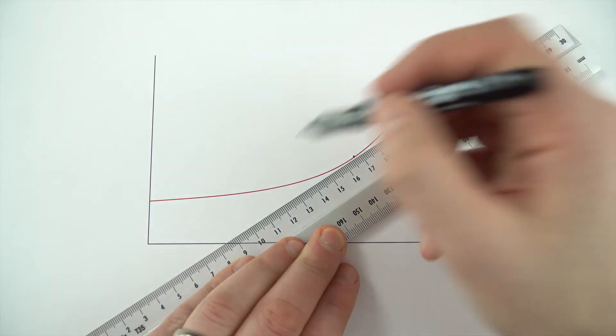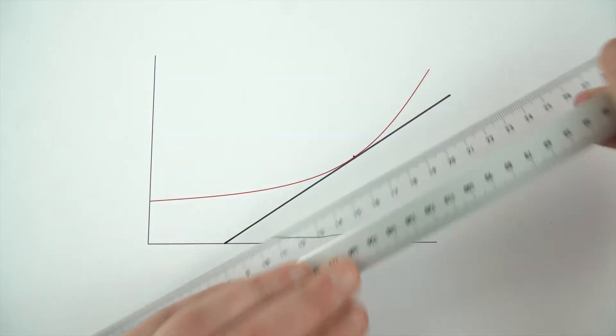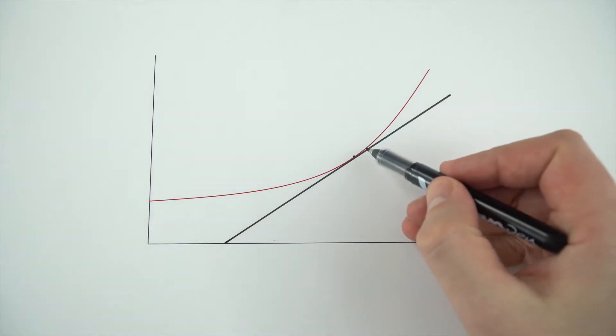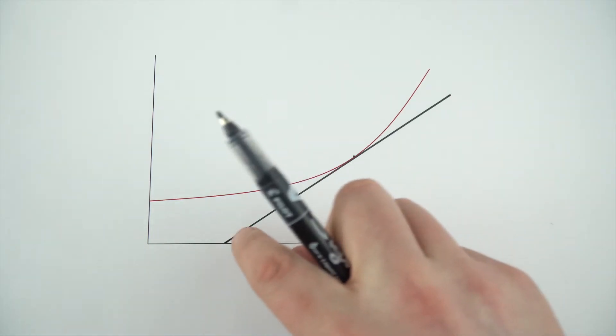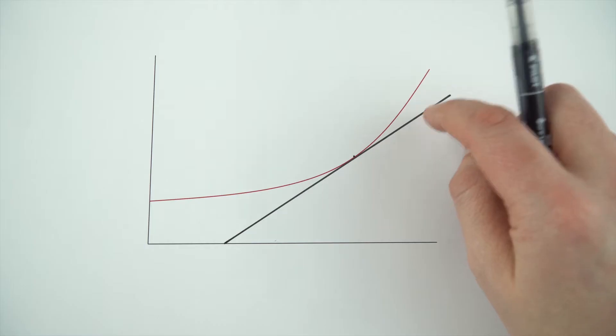I think it's probably something like this. If I draw the line on like that, I've now got a tangent to a curve at this point, and I can then just draw in my triangle and work out the gradient of this line in the way that we would do for a linear relationship.